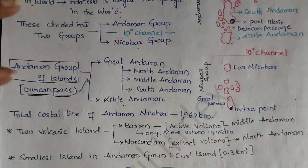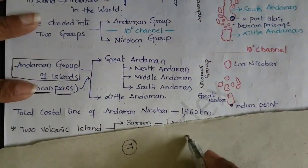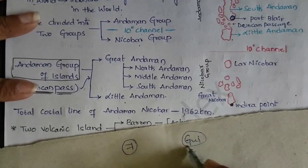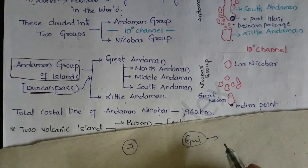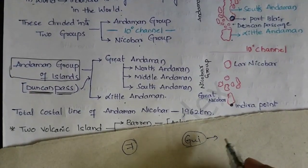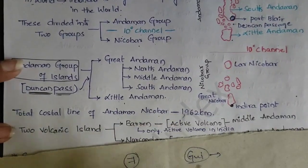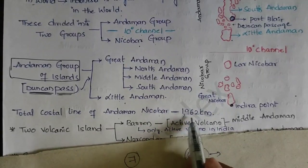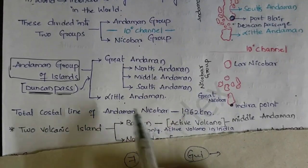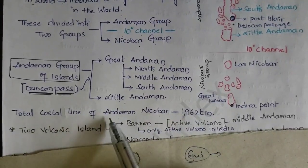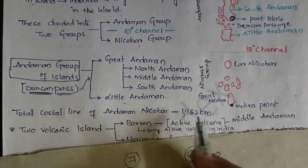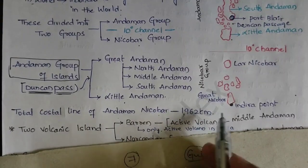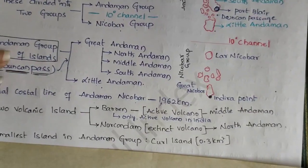If you want to talk about coastal plains, Gujarat's longest coastal line is the mainland. So Andaman and Nicobar is the island — the total coastline of Andaman and Nicobar is 1,962 km.